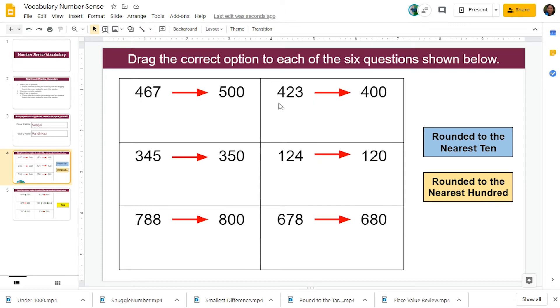Then we need to take turns reading the second one. Four hundred and twenty-three rounded to four hundred. Did we round it to the nearest ten or did we round it to the nearest one hundred?